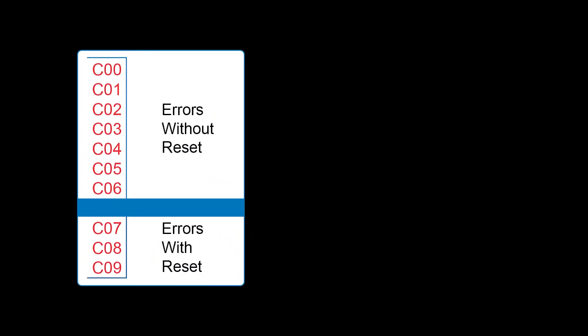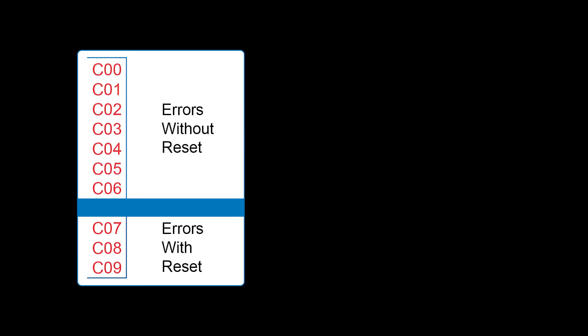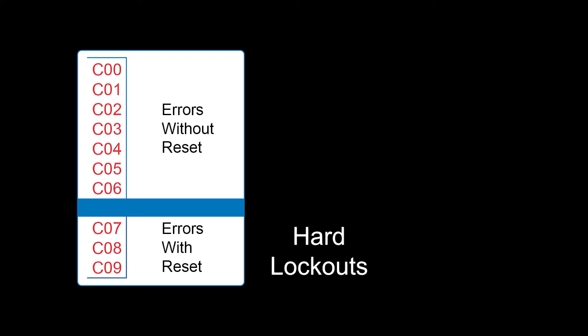C00 through C06 are what we call anomaly codes. These will not register on the front display and do not require a soft lockout or a hard reset. C07 through C09 are your hard lockout errors — those are the ones that require a reset button to be pressed.